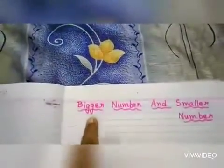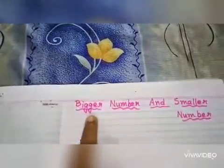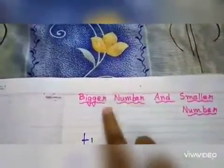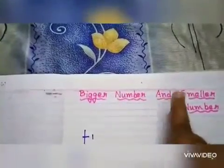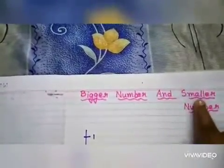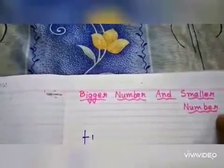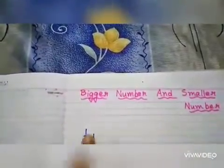What is your heading? Bigger, B-I-double-G-E-R. Bigger. N-U-M-B-E-R, Number. Bigger number. A-N-D, And. S-M-A-L-L-E-R, Smaller. N-U-M-B-E-R, Number. See here children.